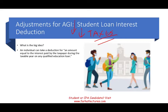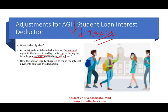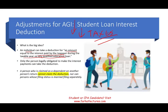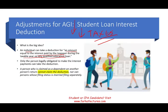An individual can take a deduction equal to the interest paid by the taxpayer during the taxable year on any qualified education loan. Only the person legally obligated to make the interest payment can take the deduction. However, that person cannot be claimed as a dependent. So if you are a dependent, you cannot take the student loan interest deduction.